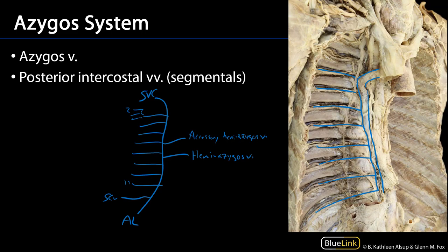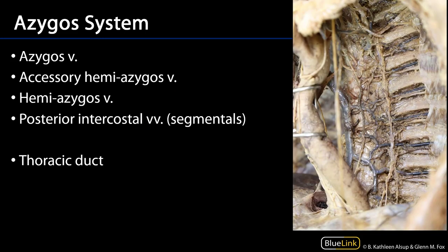The accessory hemi-azygos and hemi-azygos are going to route underneath the esophagus and aorta. Let's take a look at the left side. There is a retractor here that's elevating both the aorta and the esophagus, and that is revealing to us the azygos vein here.